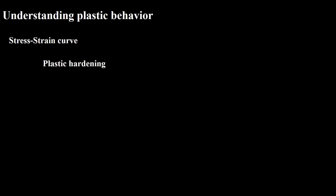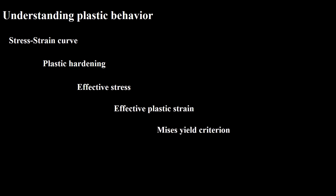In this video, at first plastic deformation in one-dimensional stress is described by a stress-strain curve. Next, plastic hardening is explained. After that, Mises effective stress and effective plastic strain are defined. Then the Mises yield criterion and its characteristics are discussed. Finally, the normality hypothesis and consistency condition, which are two important parts of plasticity, are described.